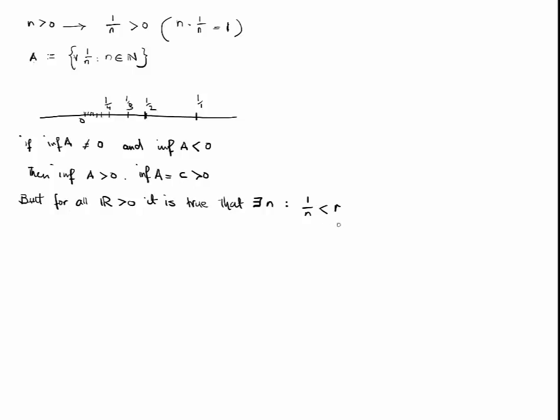But at the same time, we've said that C is the infimum of n, and therefore no 1 over n can be greater than C, and this is a contradiction.